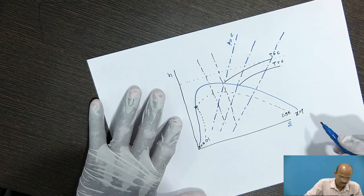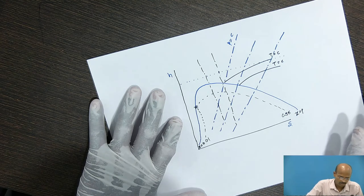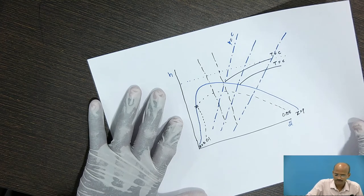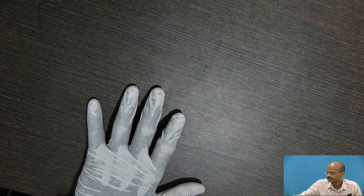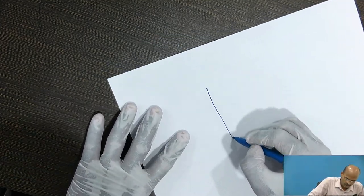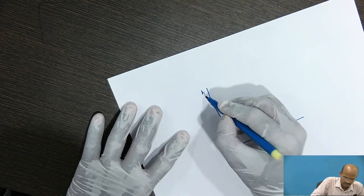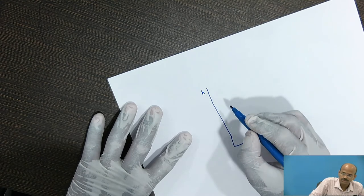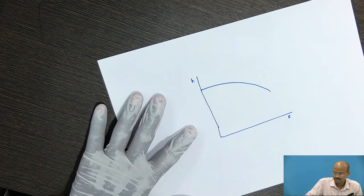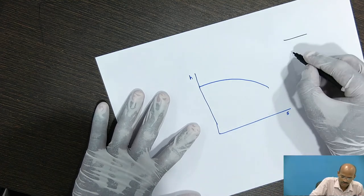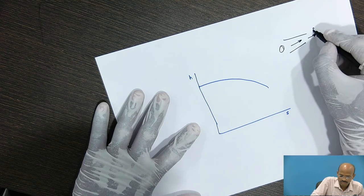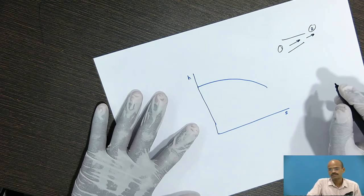This is all about the Mollier's diagram. We will try to locate points if we know any two inlet properties of the steam nozzle. Consider this is the Mollier's diagram — the H-S diagram — showing only the saturated vapor curve. Suppose you know the temperature and inlet pressure to the steam nozzle. Steam is flowing through the nozzle and the exit state is represented by point number two.